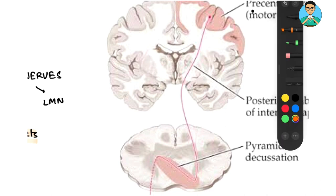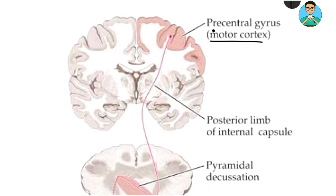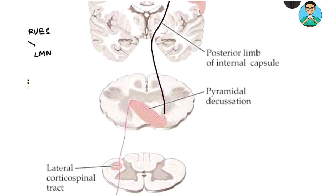Corticospinal tracts start from the motor cortex in the brain. From there, they go down through the brain, pass through the internal capsule, then through the brainstem down into the lower part of the brainstem. In the lower part of the medulla, they cross the midline — you can see the crossing here — and this level is known as the lower medulla.